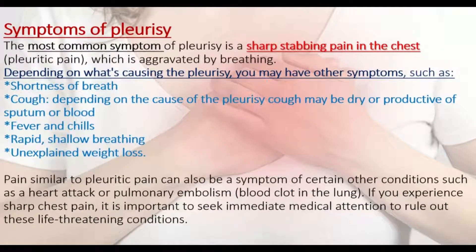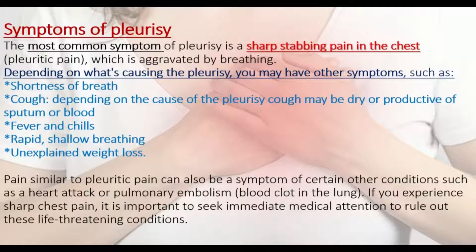The most common symptom of pleurisy is a sharp stabbing pain in the chest which is aggravated by breathing. This can affect either the front or back of the chest cavity, and sometimes patients have back or shoulder pain. Depending on the cause, other symptoms may include shortness of breath, cough, fever and chills, rapid or shallow breathing, and unexplained weight loss.